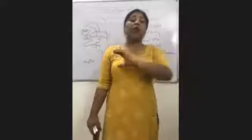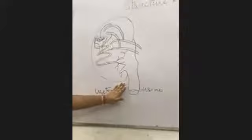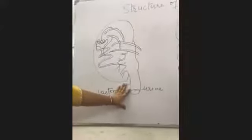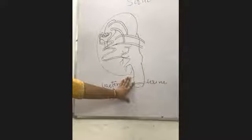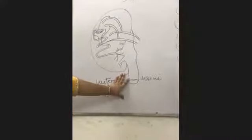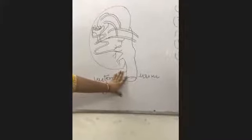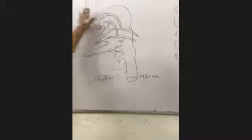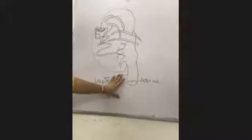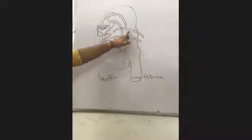Otherwise the kidney structure will become too complex. Let's start with the diagram. I want to explain the diagram to you. This will show you the shape of the kidney — it is like a bean shape. As I have already told you, the kidney is a bean-shaped structure. If you see a rajma bean, the same shape is our kidney.